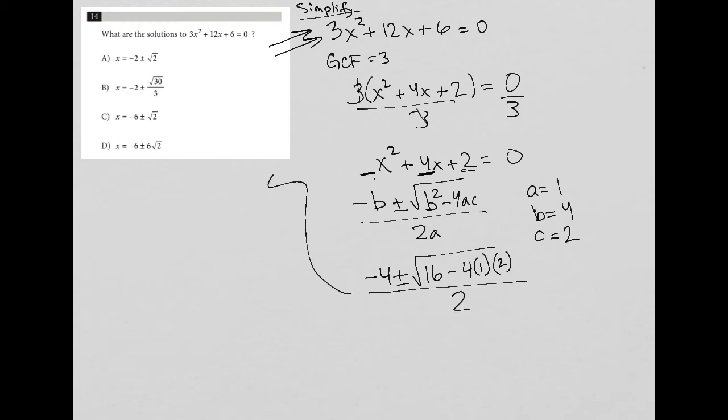Simplifying that further, I have negative 4 plus or minus the square root of 16. Then negative 4 times 1 is negative 4. Negative 4 times 2 is negative 8. So I have 16 minus 8, all over 2. Simplifying that further, I have negative 4 plus minus 16 minus 8 is 8, all over 2.